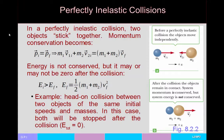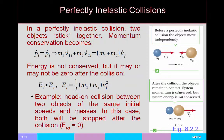In a perfectly inelastic collision, momentum conservation gives: the mass of the first object times its initial velocity plus the mass of the second object times its initial velocity equals the total mass of both objects times the final velocity. Energy is not conserved, and depending on the parameters, you may end up with mechanical energy of zero afterwards — that's the case when two objects collide and both are stopped.